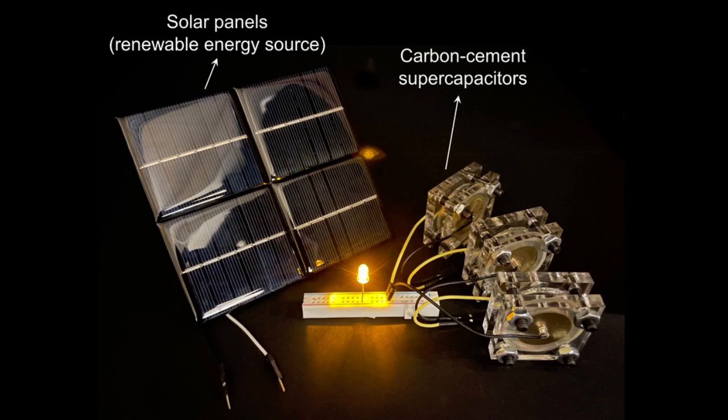After a series of tests used to determine the most effective ratios of cement, carbon black, and water, the team demonstrated the process by making small supercapacitors about the size of some button-cell batteries, about 1cm across and 1mm thick, that could each be charged to 1V, comparable to a 1V battery. They then connected three of these to demonstrate their ability to light up a 3V light-emitting diode LED. Having proved the principle, they now plan to build a series of larger versions, starting with ones about the size of a typical 12V car battery, then working up to a 45 cubic meter version to demonstrate its ability to store a house worth of power.